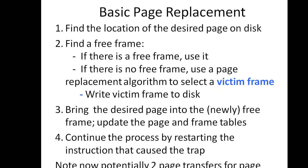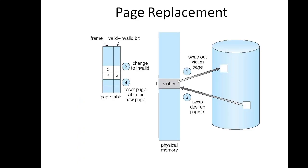Finally, restart the user process. In the figure, the victim page in physical memory is identified through a page replacement algorithm, then swapped out to disk. The page table is updated — changing the valid-invalid bit to invalid. Next, the desired page is swapped into physical memory, the page table is updated again, and execution of the process resumes.